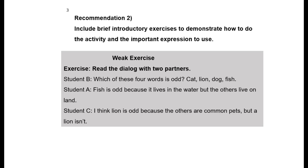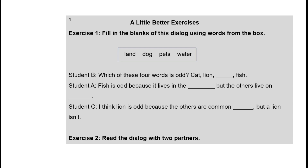Now I'll show you a weak introductory exercise, then contrast it with a strong and effective one. The weak exercise simply says: read the dialogue with two partners. Student B starts: 'Which of these four words is odd? Cat, lion, dog, fish.' Student A: 'Fish is odd because it lives in the water, but the others live on land.' Student C: 'I think lion is odd because the others are common pets, but a lion isn't.'